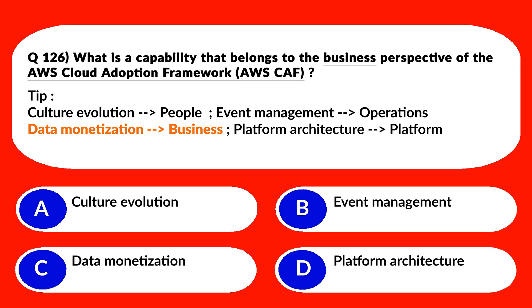Another question on the Cloud Adoption Framework. Here's a quick tip: remember that culture evolution belongs to People, event management is a keyword for Operations, and data monetization belongs to Business. As per the question, the keyword is 'business,' which corresponds to data monetization. So option C, data monetization, is the correct answer.